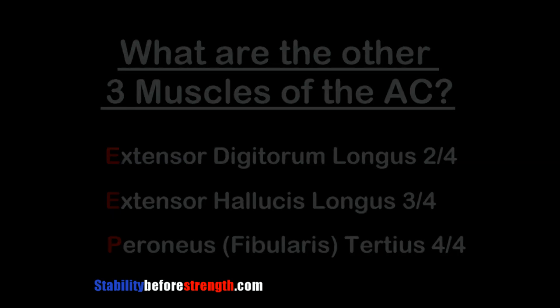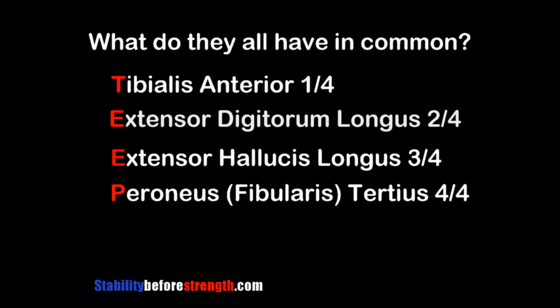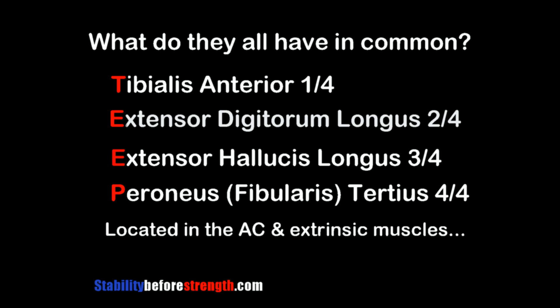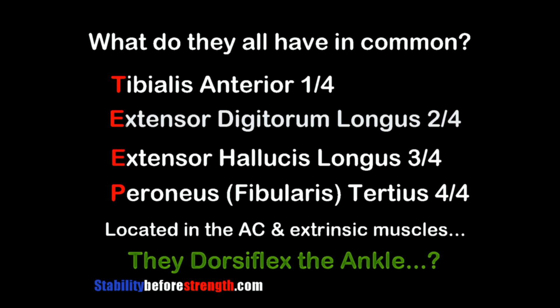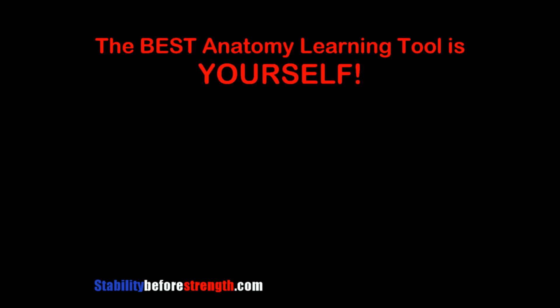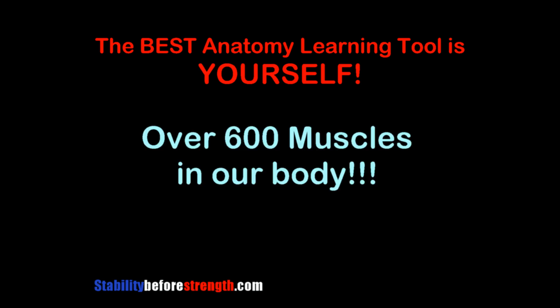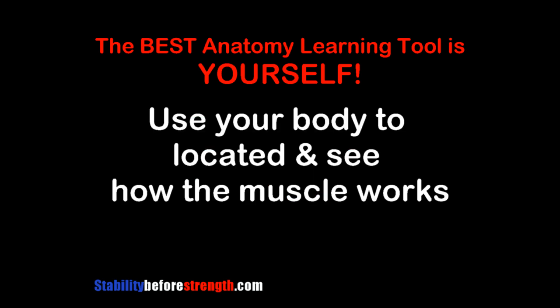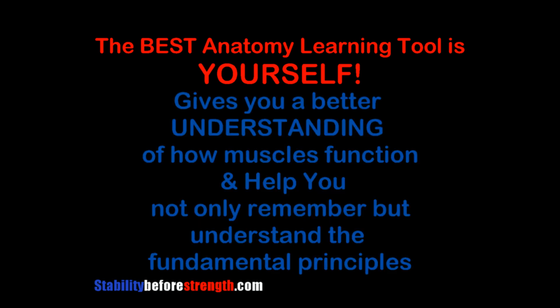Since they are all located in the anterior compartment and are extrinsic muscles, we can guess they will also dorsiflex the ankle — but we need to check the action of the tibialis anterior to confirm. Now, the best learning tool is yourself. Since we all have over 600 muscles in our body, the best tool is your own body. Use it to locate muscles and understand how and why they have such unique functions.